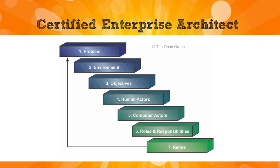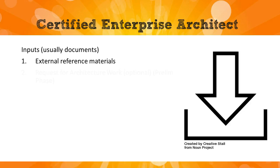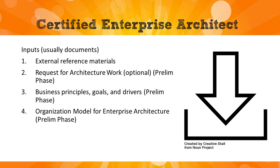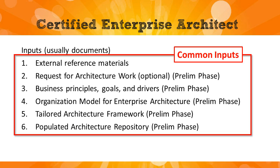I'm going to fly through the inputs because I find them to be the least helpful bits. You've got the reference materials, request for architecture work — some of these things, like principles, were created in the preliminary phase — the tailored architecture framework, again from the preliminary phase, and the populated architecture repository. A lot of these things are outputs of the last phase going to become inputs. I'm calling them common inputs because almost all of the architecture definition phases use these things.